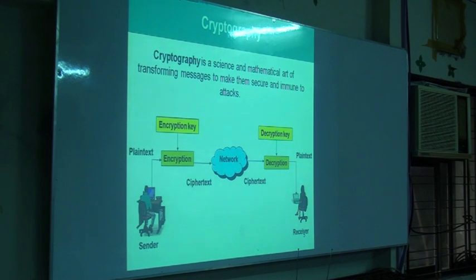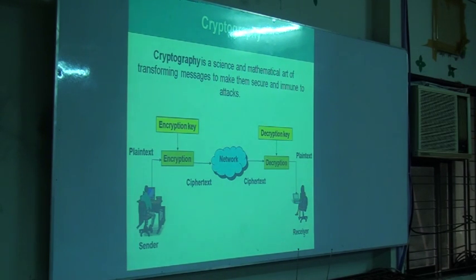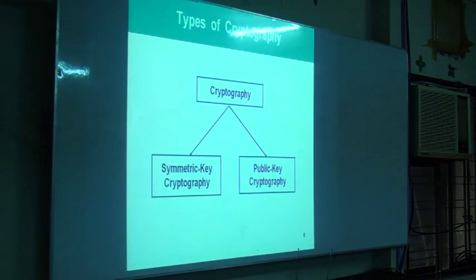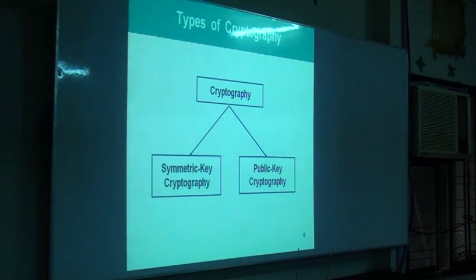An intruder must have those parameters in order to understand the messages. At the recipient end, the receiver decrypts the ciphertext to create plaintext using the key. Types of keys represent types of cryptography. There are two types: symmetric cryptography and asymmetric or public-key cryptography.